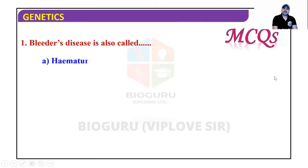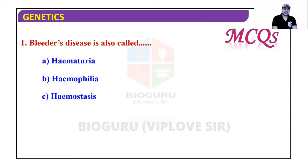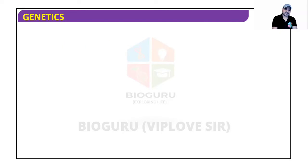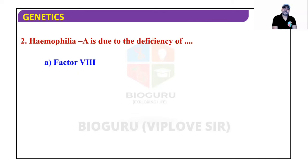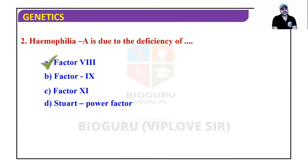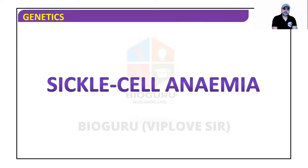MCQ: Bleeders disease is also called hemophilia. Hemophilia A is due to deficiency of factor 8.